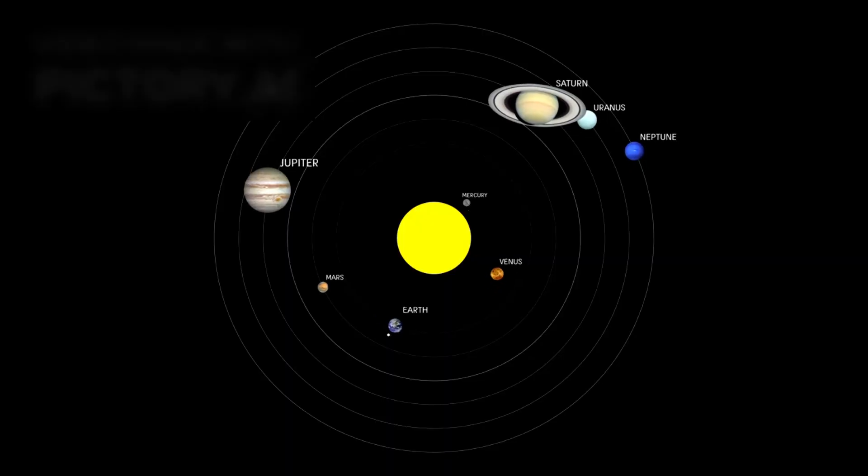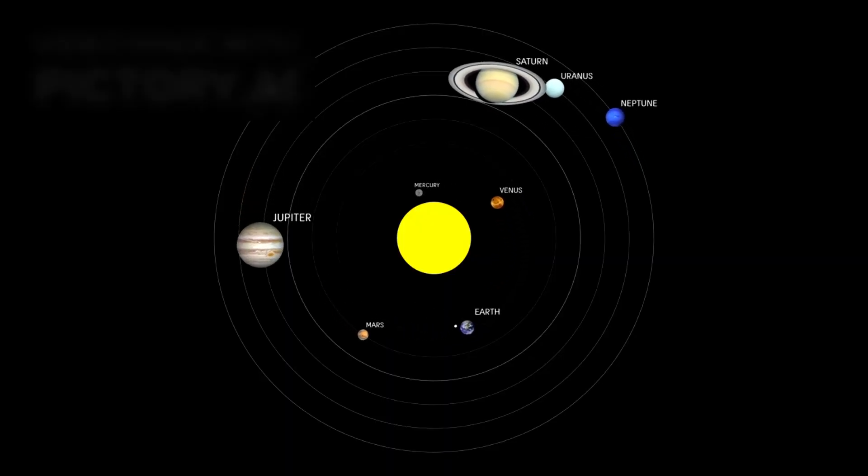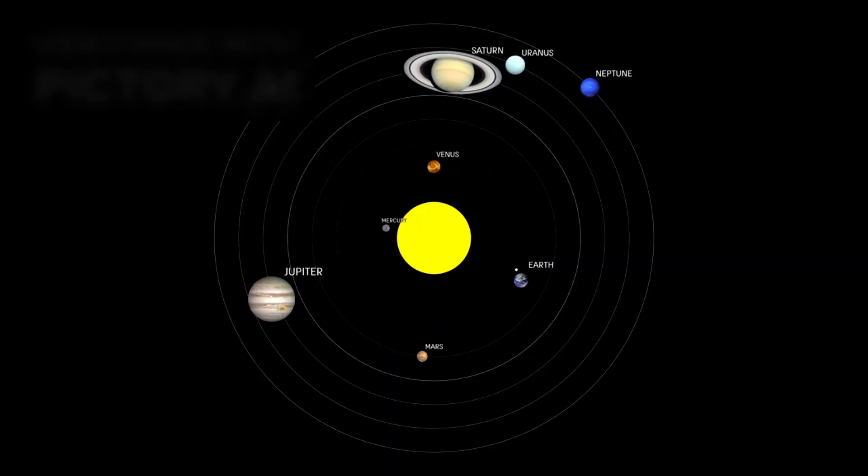Pluto is no longer seen as a silent, lifeless orb drifting in the darkness. Instead, it's emerging as one of the most mysterious and intriguing bodies in our solar system.